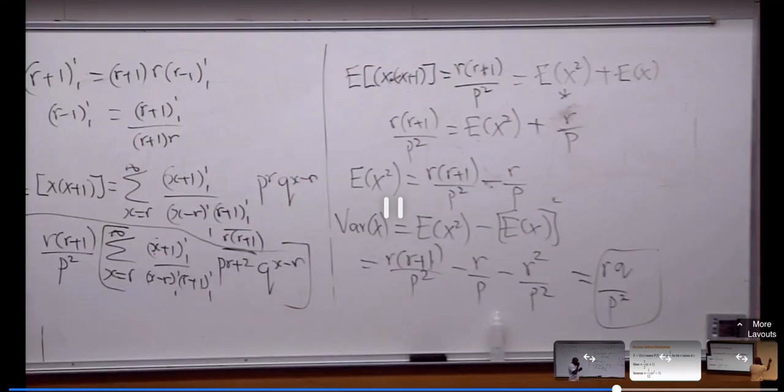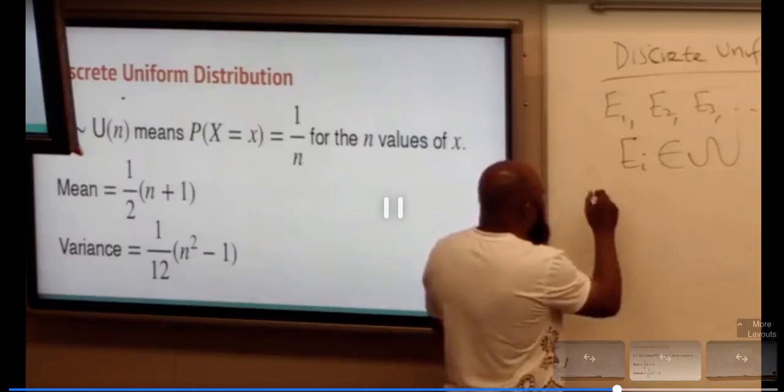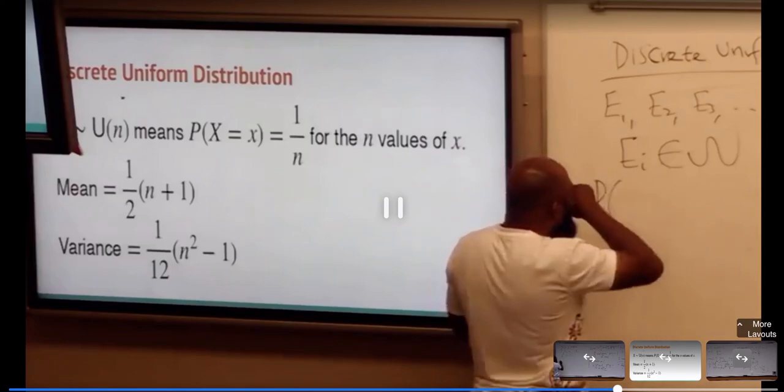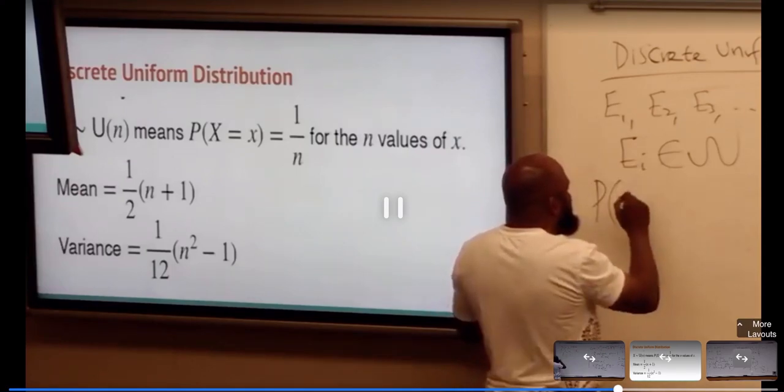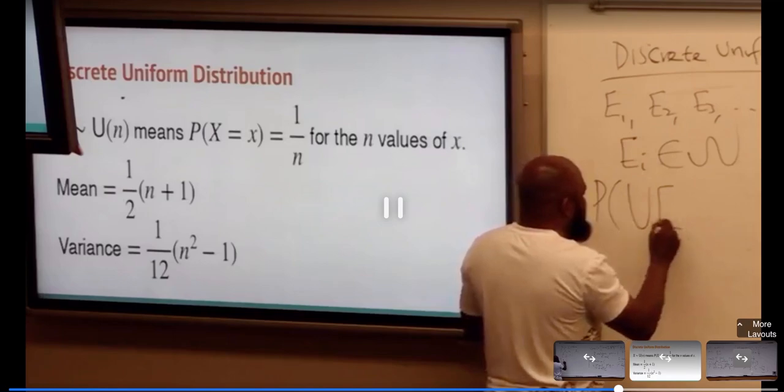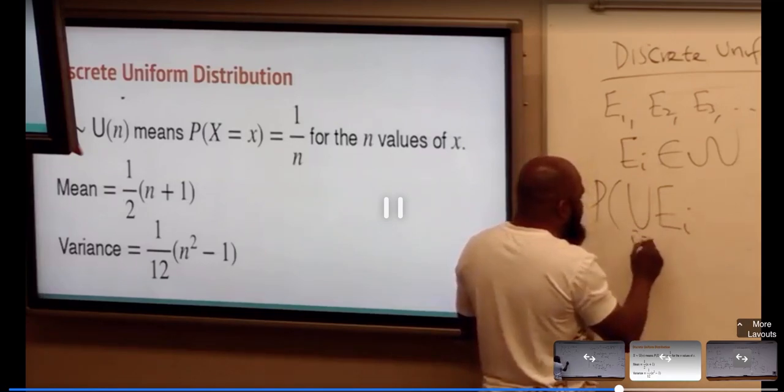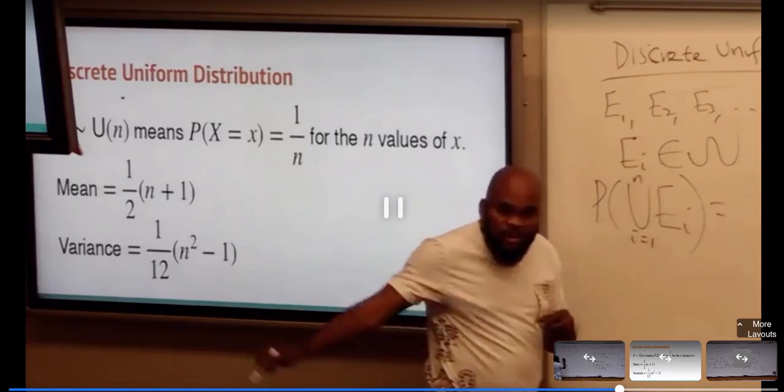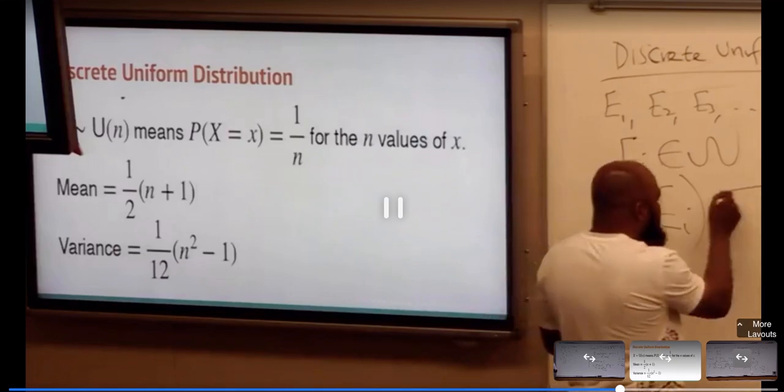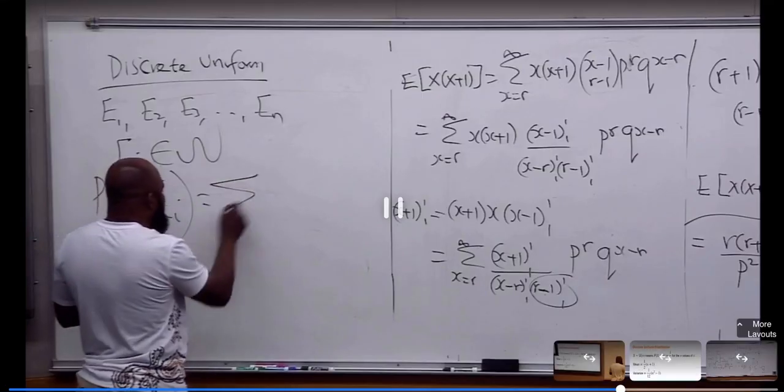Now, here, the probability of the union, I start from one here to n. The probability of the union is going to be what? Do you remember that we did this?